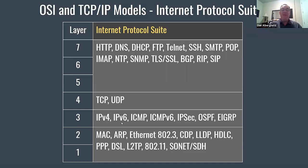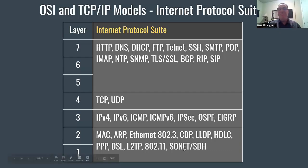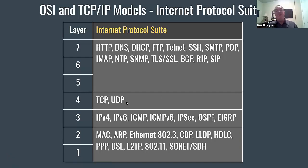At the internet layer we have IPv4 and IPv6, ICMP — the Internet Control Message Protocol, which is used for ping among other messages — ICMPv6 for IPv6, IPsec for IP security built into the lower layers providing security to packets at layers 3, 2, and 1, and routing protocols. These are routing protocols you're going to learn.